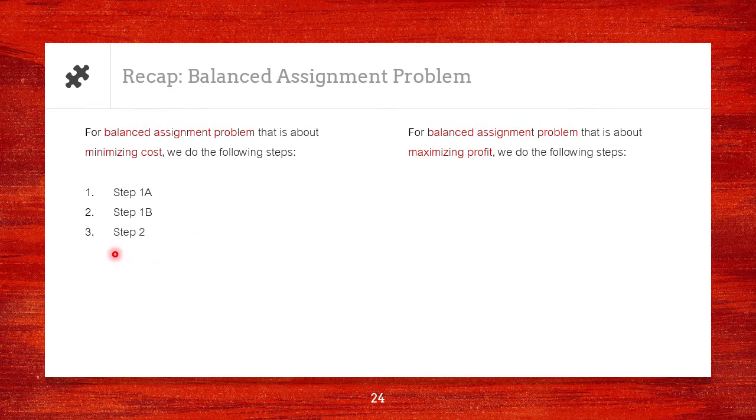And then next, we have step 2, which is the optimality test. This is where we want to cover the zeros with the least number of vertical and horizontal lines. If necessary, we carry out step 2.5. And then finally, we have step 3, which is doing the assignment.